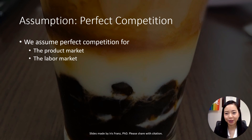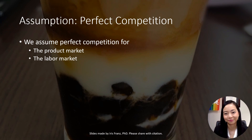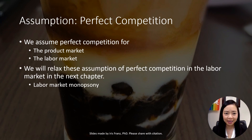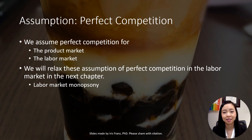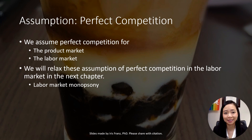Therefore, I am a price taker in the product market and I am a wage taker in the labor market. Later, we will relax the assumption of perfect competition in the labor market and see what happens if the labor market is subject to monopsony, meaning only one buyer but many sellers in the labor market.